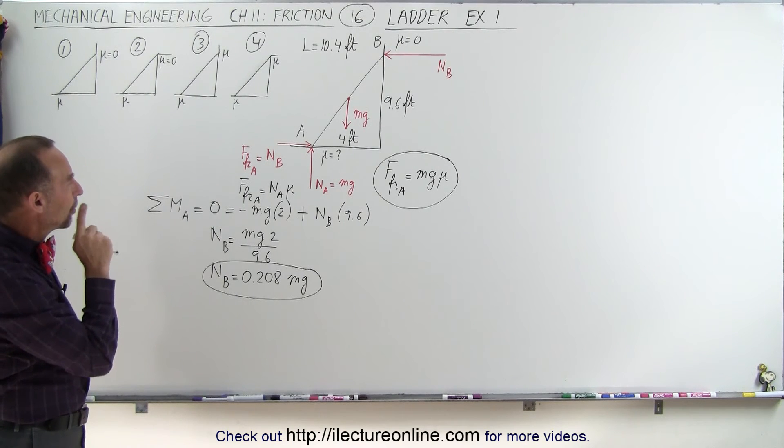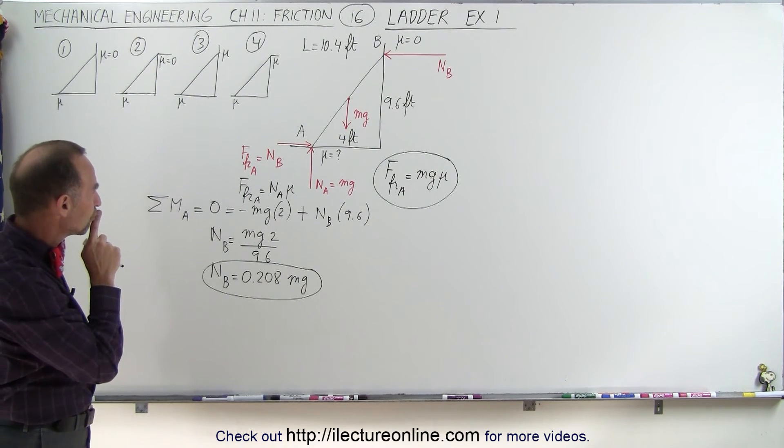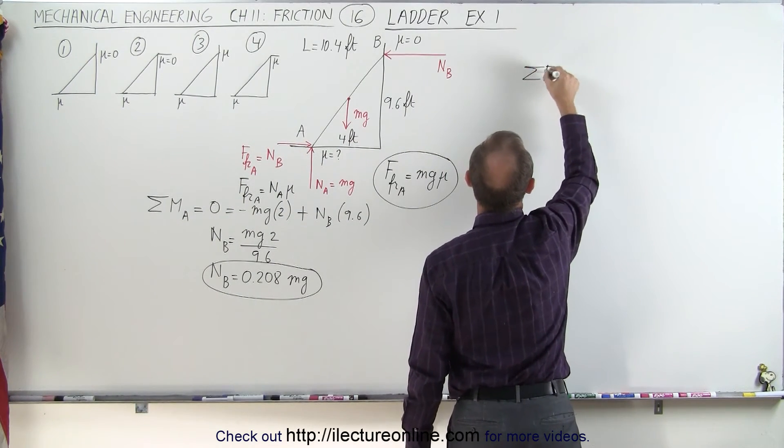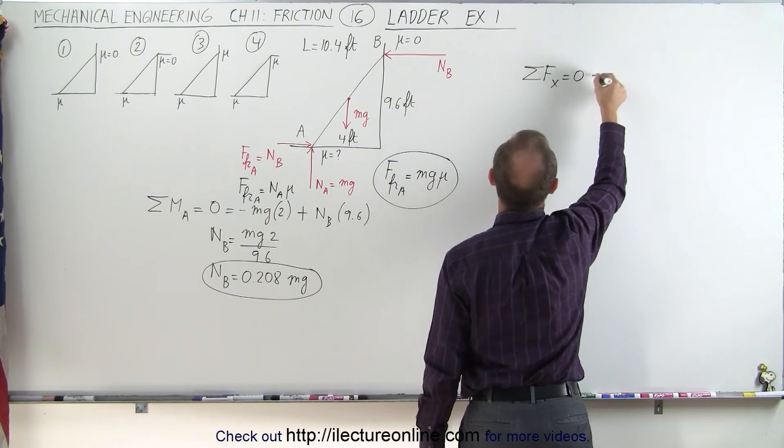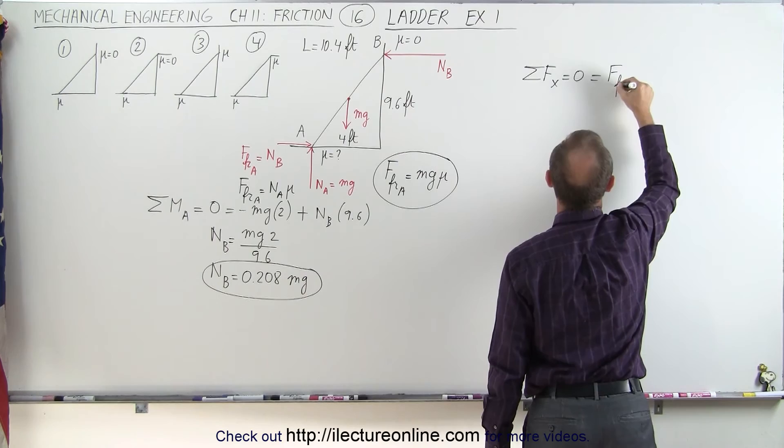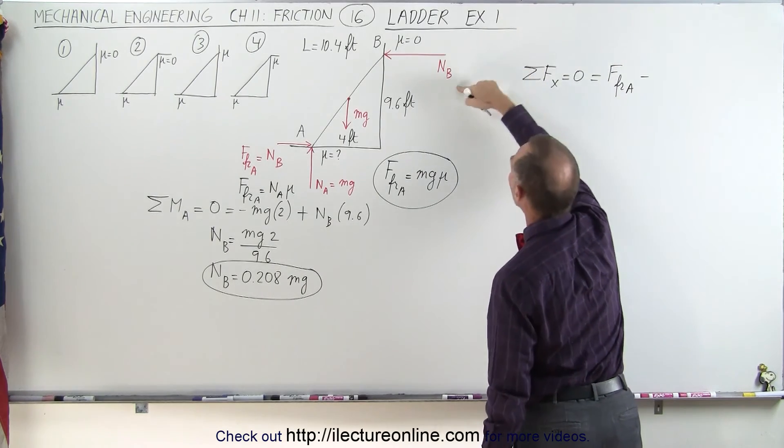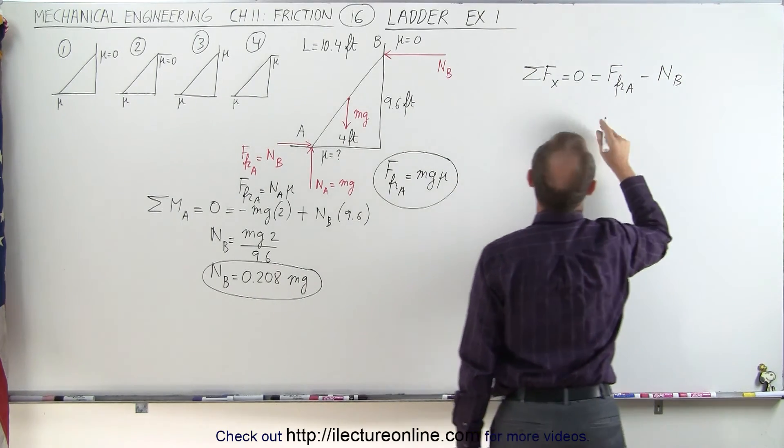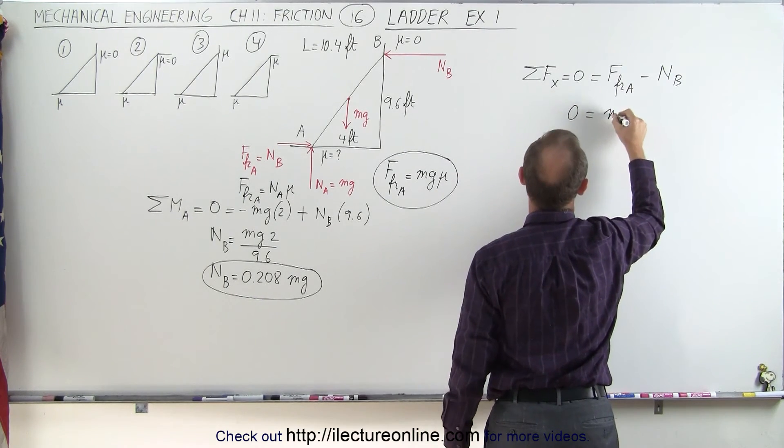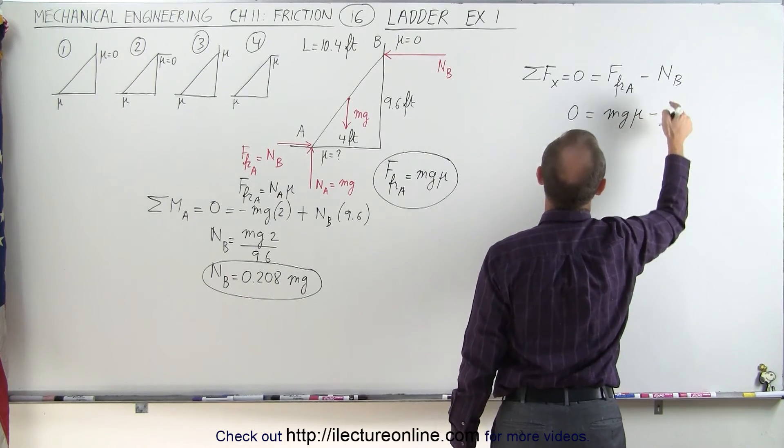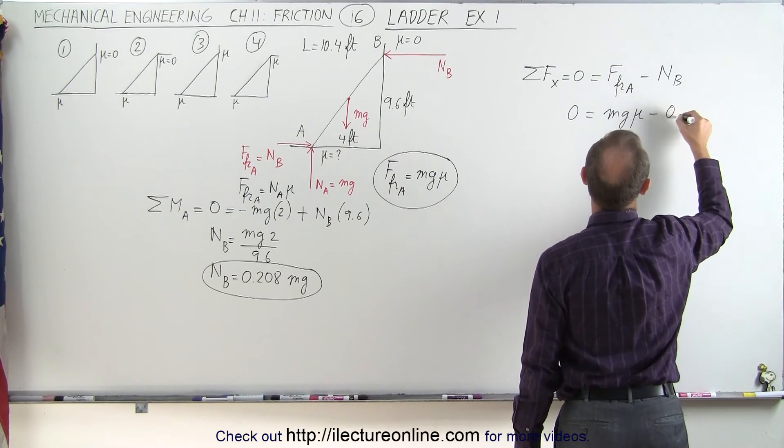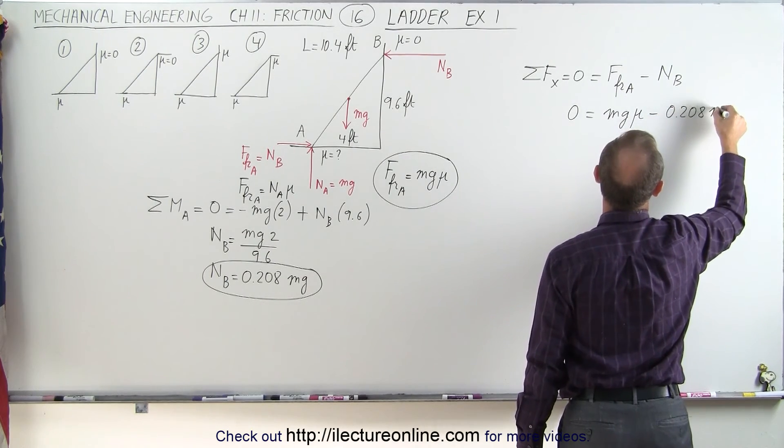Now we're going to sum up all the forces in the x direction. So sum all the forces in the x direction, they should add up to 0. And of course, we have the friction force of A pushing to the right, so that's force friction of A minus the normal force of B. And that means that 0 is equal to the friction force of A, which is Mg times Mu, minus the normal force of B, which is 0.208 Mg.